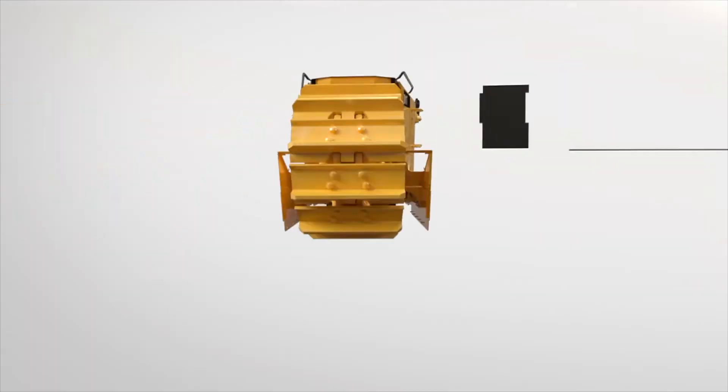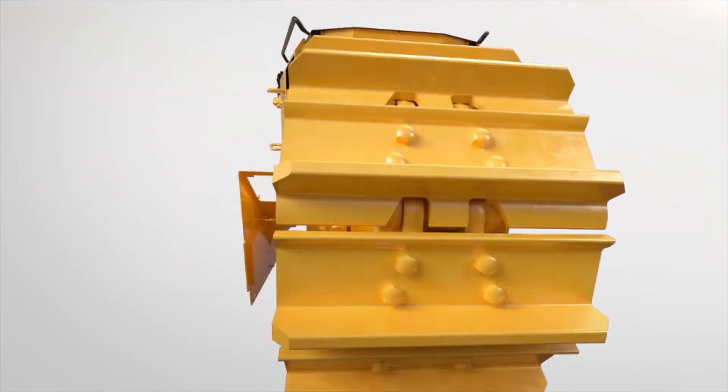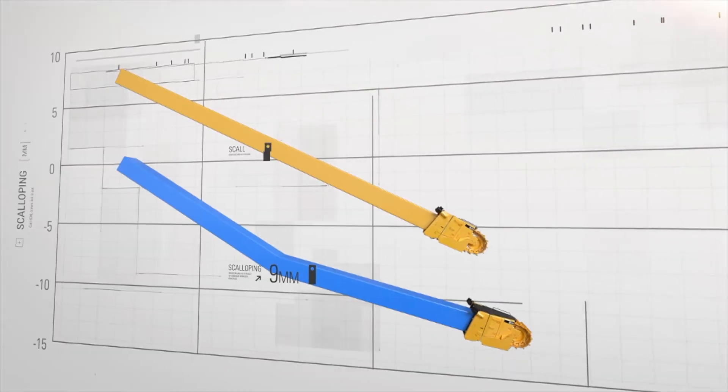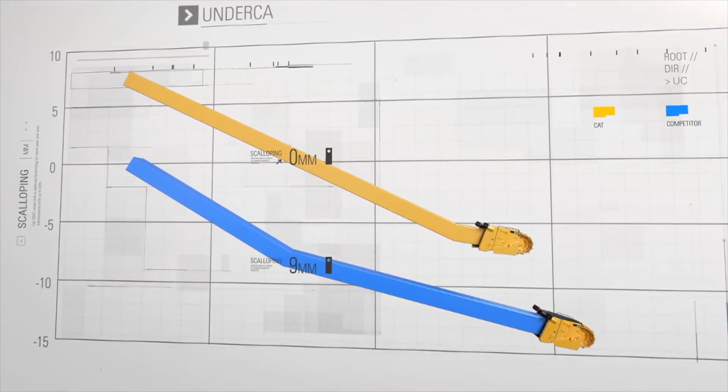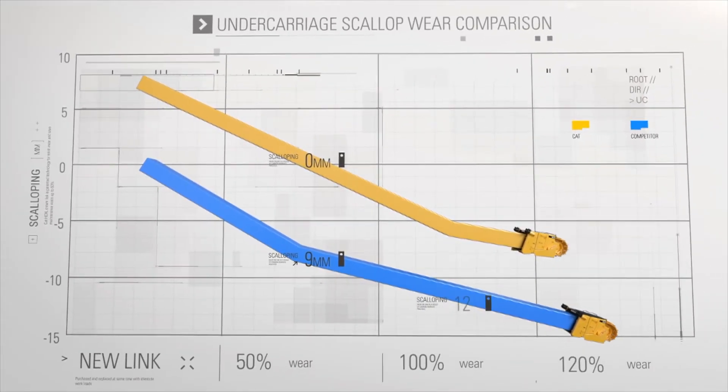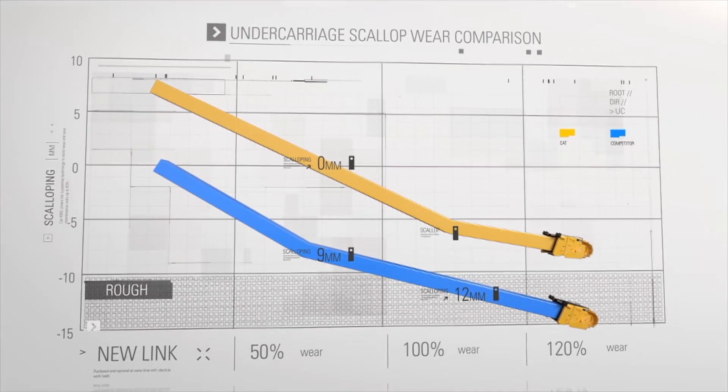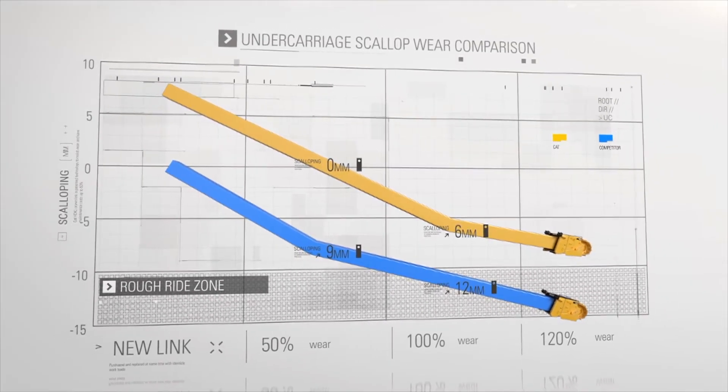Studies show it too: at 50% wear, the tall link has nine millimeters of scalloping while the crowned link has zero. And at 100% wear, tall link scalloping is 12 millimeters, while the crown link is just at six millimeters.